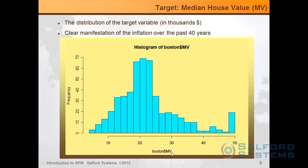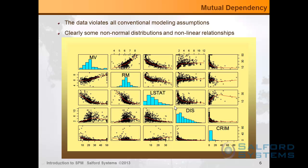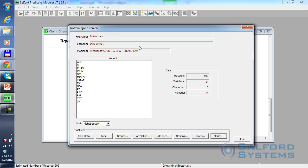Just to give you some flavor, here is the MV variable as a histogram. It's an interesting historical curiosity — back 40 years ago, you could buy a home in Boston on average for $20,000. This is the continuous target variable we are trying to predict. The problem is that there is a lot of nonlinear mutual dependency among not just the target and predictors, but also the predictors themselves. What you see here is a well-known scatter plot matrix showing all of these pairwise scatter plots. There is a lot of mutual dependency and many assumptions that are likely to be violated. That's why I picked this dataset to illustrate some of the concepts of data mining.